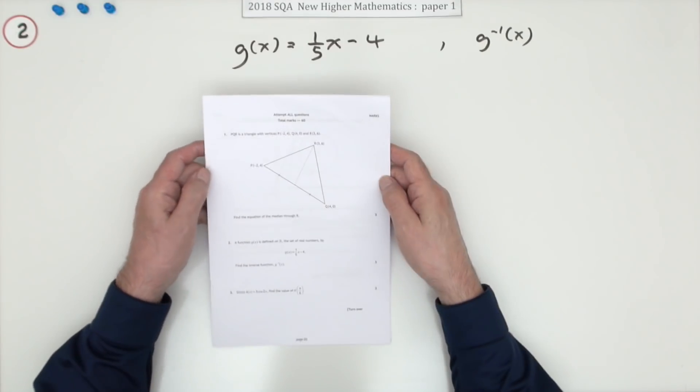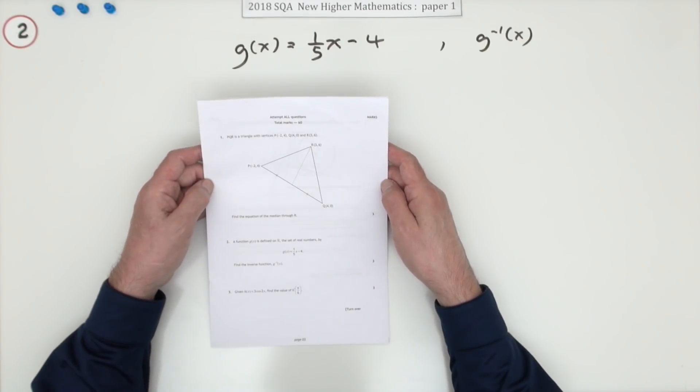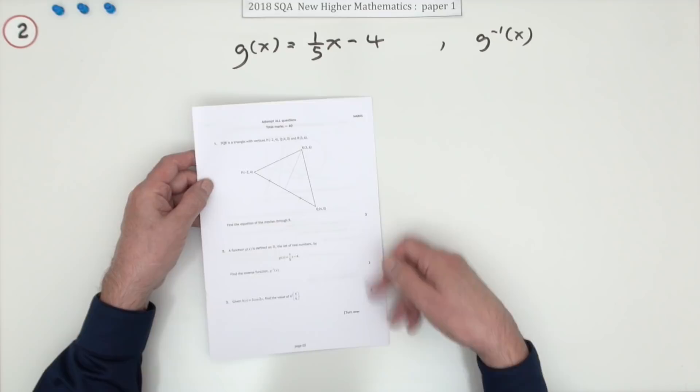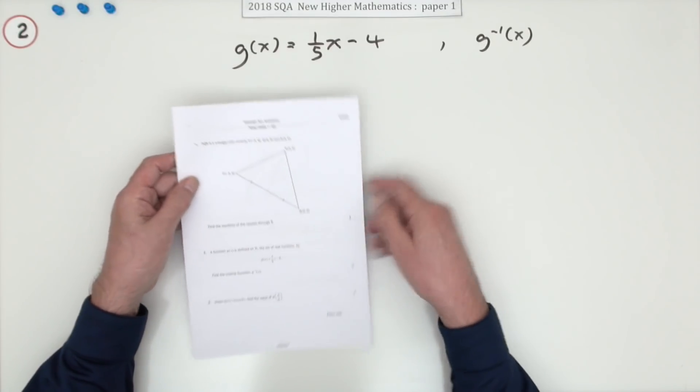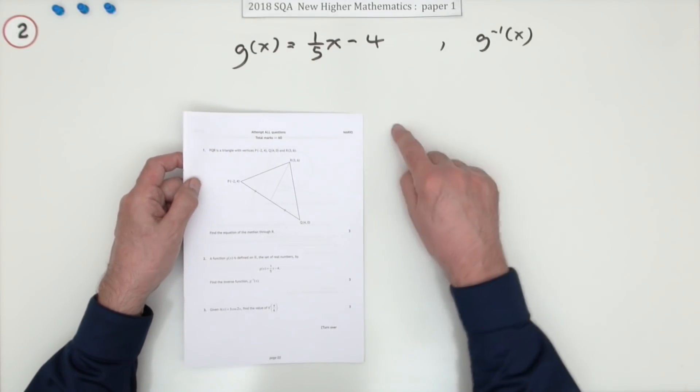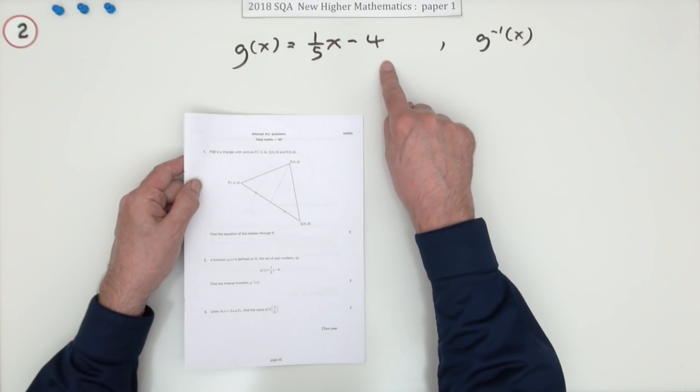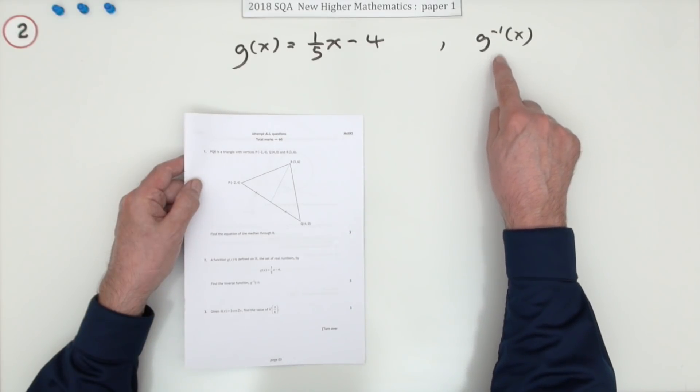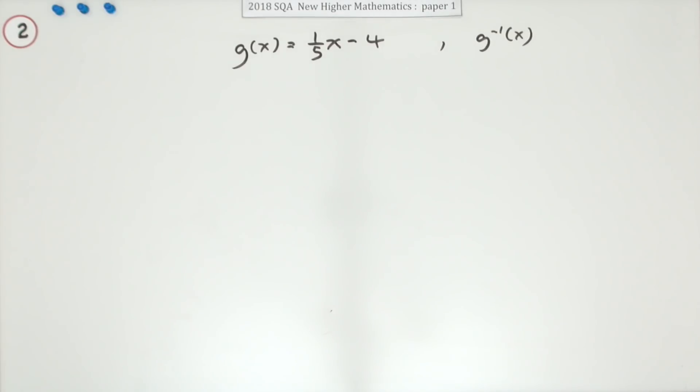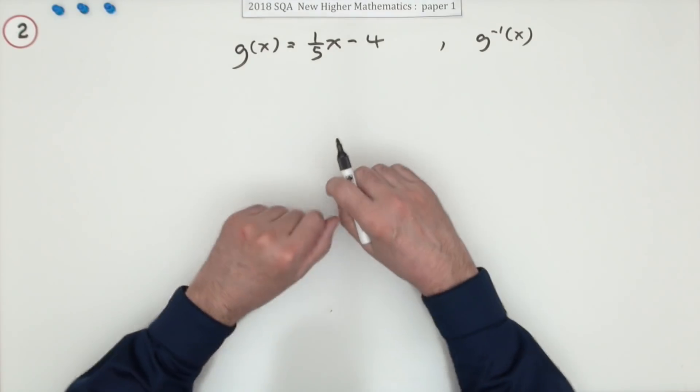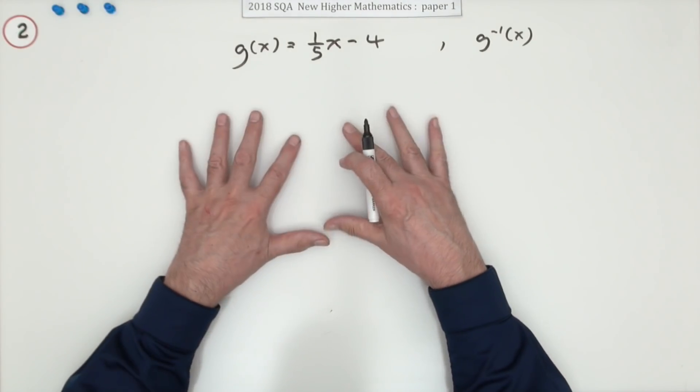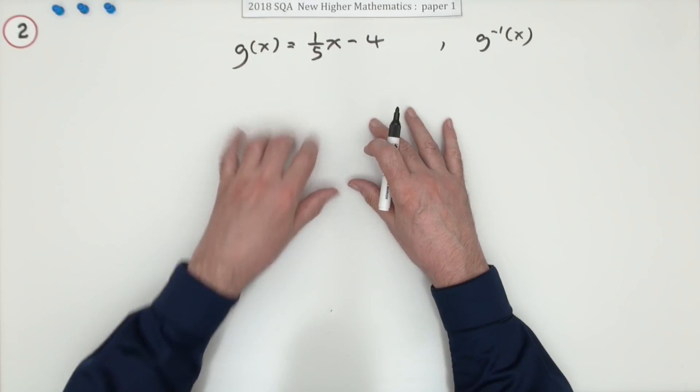Number two from the 2018 SQA Higher Maths paper one, another three mark question. On the first page here we've got inverse of a function. You're given this function and you need to find the formula for its inverse. There are multiple ways of doing that - not actually umpteen, there's about two algebraic ways plus a very quick way just using your fingers.